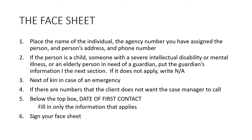The face sheet — that's worksheet number one. It's the cover of your file. Number one, place the name of the individual, the agency number you've assigned the person, and the person's address and phone number. Two, if the person is a child, someone with a severe intellectual disability, mental illness, or an elderly person in need of a guardian, put the guardian's information in the next section. If it does not apply, write N/A — that way people know you saw it and it's not applicable to this specific person.